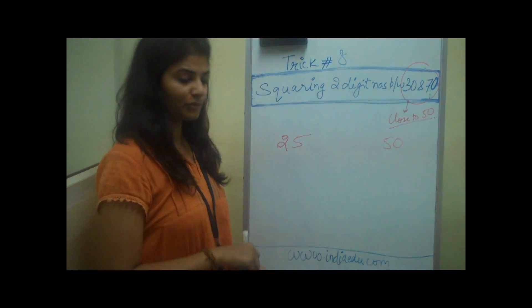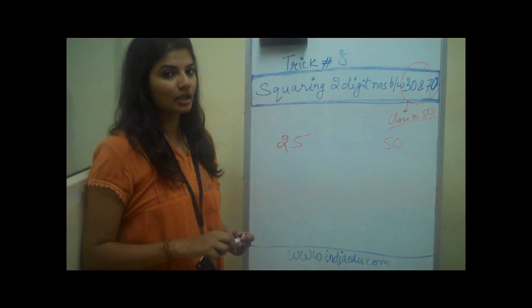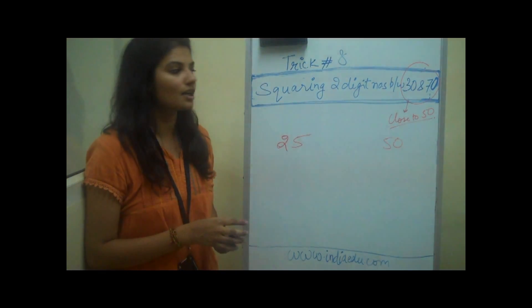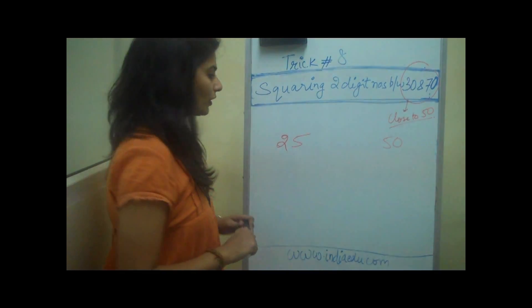Hi, I'm Neha again from www.india.com. Today we're going to talk about our eighth trick in which we'll square two digit numbers which are between 30 and 70, numbers close to 50. Let's take an example and understand this concept.